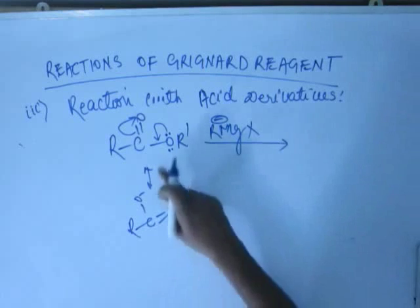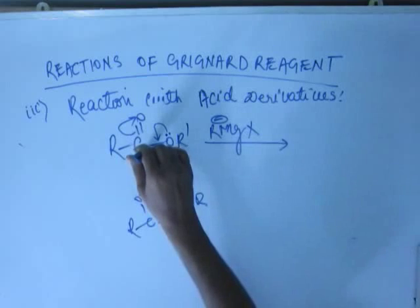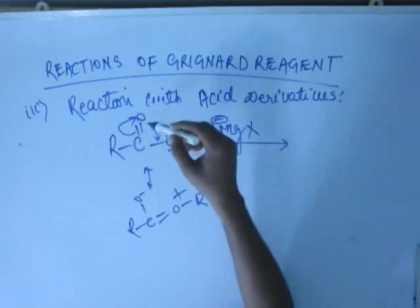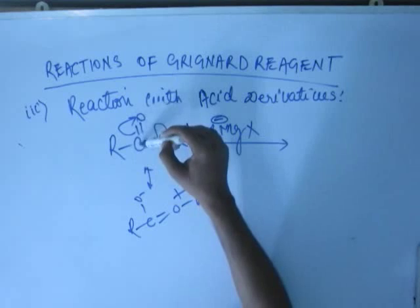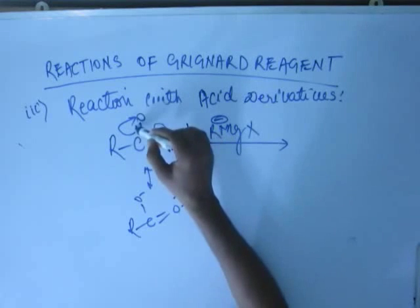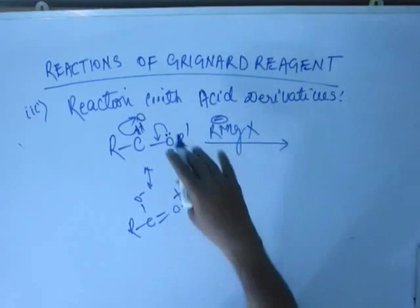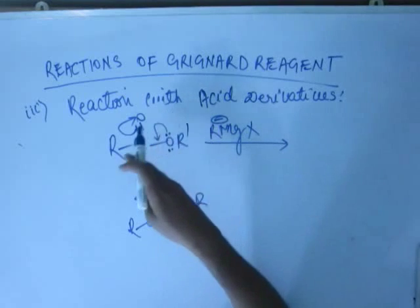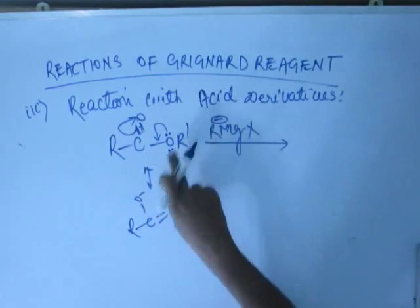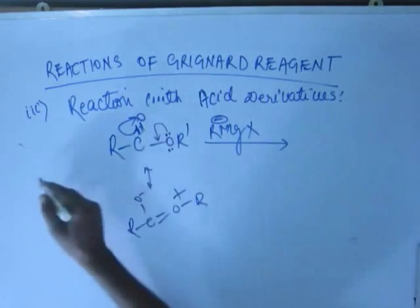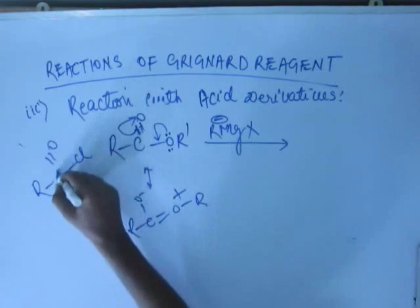Due to this resonance — due to the plus M effect of Oxygen — this carbon does not have a great deal of positive charge, because the positive charge it had due to electronegativity difference and shift of electron density toward Oxygen is mitigated by the electron-donating nature of this Oxygen. So this carbon will not have as high a charge as in the previous acyl chloride reaction.